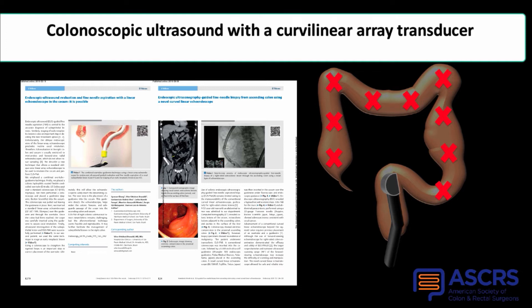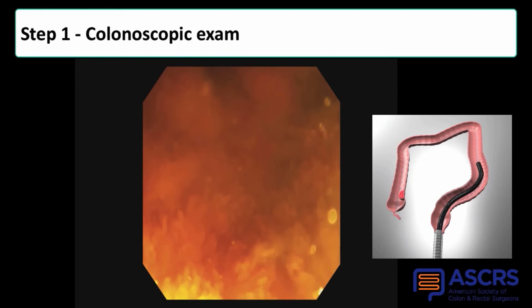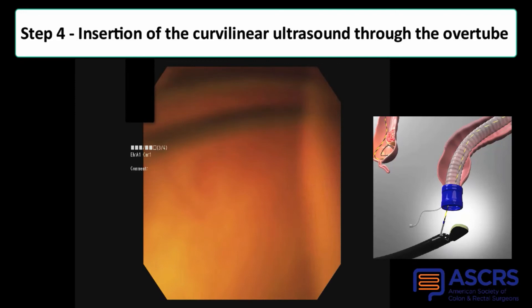First, we performed a colonoscopic exam to straighten the sigmoid colon and leave a guidewire in the cecum. The colonoscope was removed, leaving an overtube in the left colon. The curvilinear array probe was inserted through the rectosigmoid using the overtube, and from that point using the guidewire to direct the tip of the scope to the cecum.